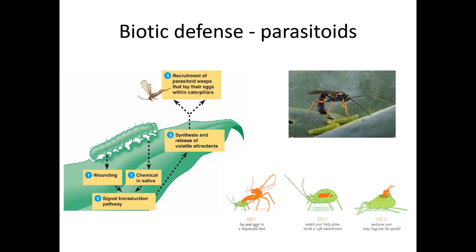Another biotic defense is parasitoids. When an herbivore starts consuming plant tissue, it wounds the plant, and chemicals mixed with the herbivore's saliva produce a signal that travels through the plant, leading to the release of volatile attractant compounds. These volatiles signal parasitoids that a caterpillar or some other insect is damaging the plant. The parasitoids get recruited to that plant, lay their eggs inside the caterpillar, and those eggs end up killing the herbivore — a mutualism where the parasitoid finds food and the plant gets defense.